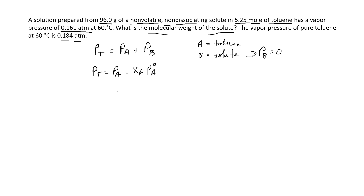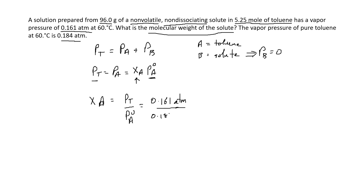Based on that, we can find the mole fraction because we know P_T and we know the vapor pressure of pure A, toluene. So the mole fraction χ_A equals P_T divided by P°_A. Putting in the numbers: P_T is 0.161 atmospheres divided by P°_A of 0.184 atmospheres — the atmosphere units cancel — giving a mole fraction of 0.875, which has no units.